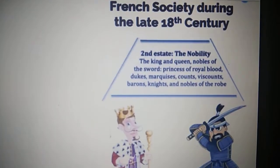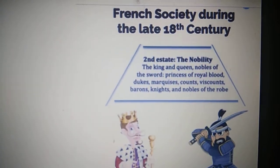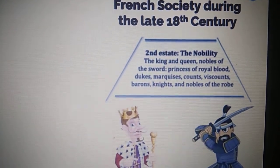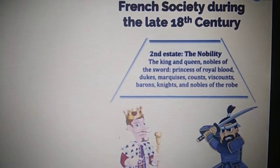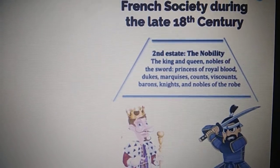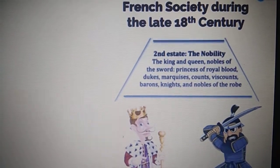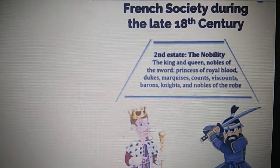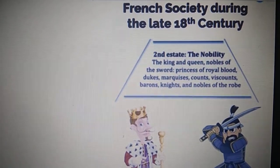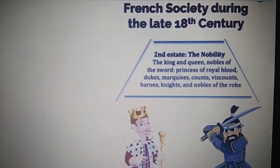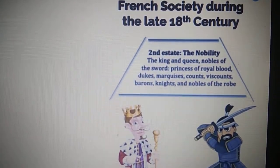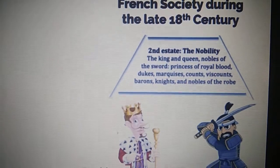The second state was the nobility. They comprised of the kings, queens, nobles, princes, dukes, marquesses, counts, barons, knights — all these belong to the nobility. And the third state was for the commoners, and they included lawyers, doctors, businessmen, merchants, soldiers, craftsmen, shopkeepers, and peasants.